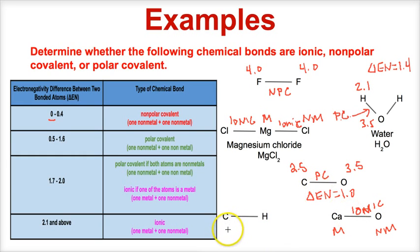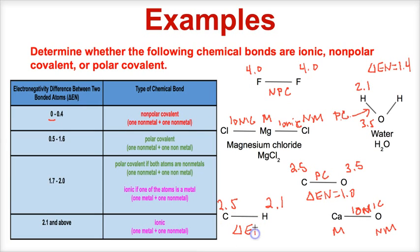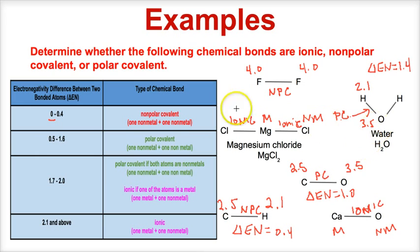Last but not least, looking at the carbon-to-hydrogen bond: carbon has an electronegativity of 2.5 and hydrogen is 2.1. Subtracting and taking the absolute value gives an electronegativity difference of 0.4, which is nonpolar covalent — NPC. So there you go — that's how you determine the types of chemical bonds using your periodic table and electronegativity chart. I hope you understand the difference between the three major types of intramolecular forces: ionic bonds, nonpolar covalent bonds, and polar covalent bonds.